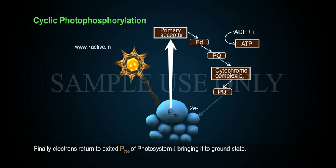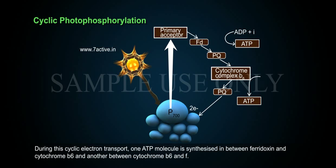Finally, electrons return to excited P700 of photosystem 1, bringing it to ground state. During this cyclic electron transport, one ATP molecule is synthesized in between ferredoxin and cytochrome B6, and another between cytochrome B6 and F.